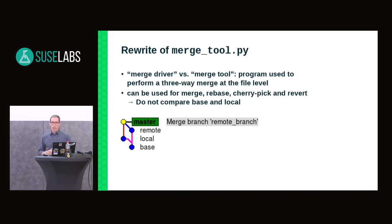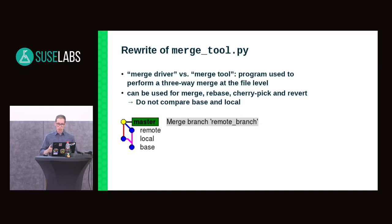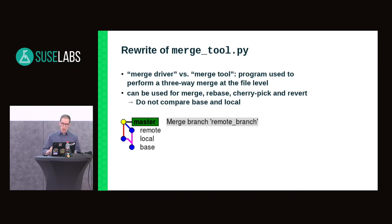The other area that has seen a lot of work is the merge tool, or merge_tool.py script. Git has the concept of a merge driver and a merge tool — both are programs used to perform a three-way merge at the file level. The difference is that the merge driver runs automatically by Git during certain operations, whereas the merge tool is run manually by the user. What we really want is for the merge driver to handle as many situations as possible automatically, making it transparent for users.